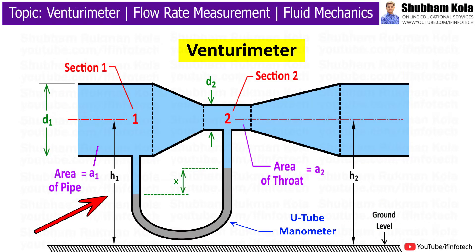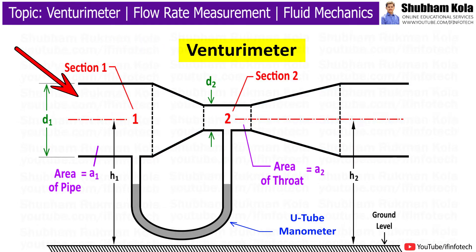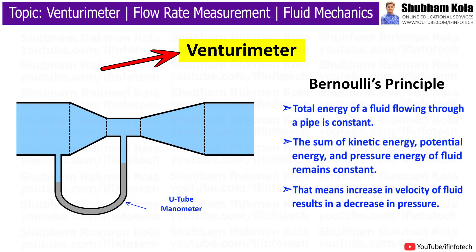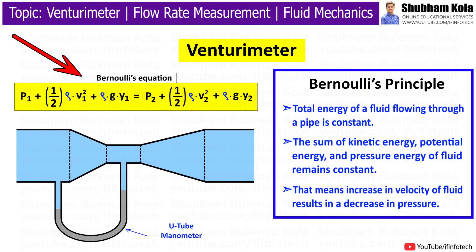In this video, we will discuss about construction and working of Venturimeter, which is used to measure flow rate of fluid in a pipe. The Venturimeter works on the principle of Bernoulli's equation.